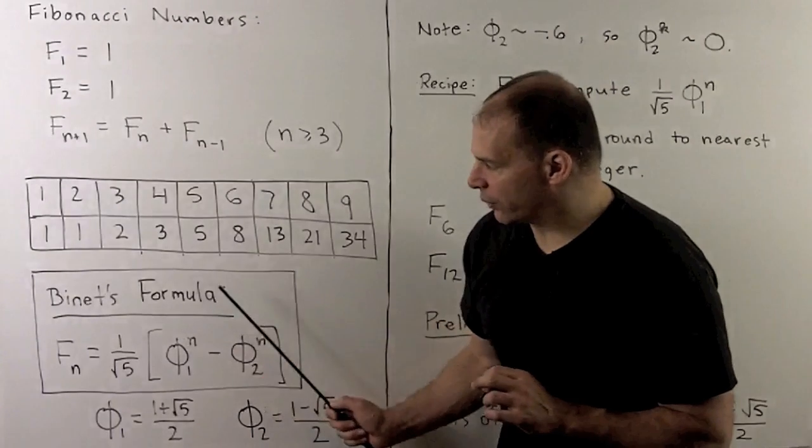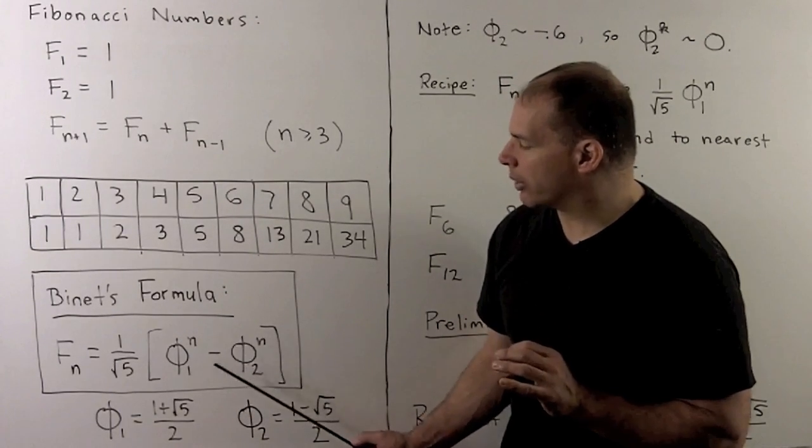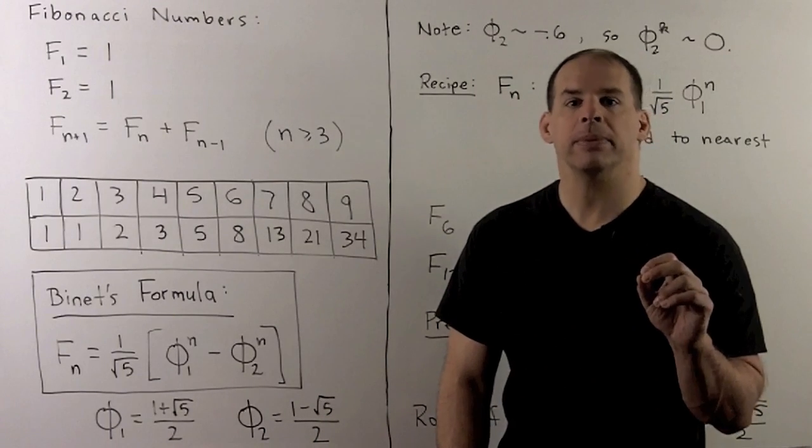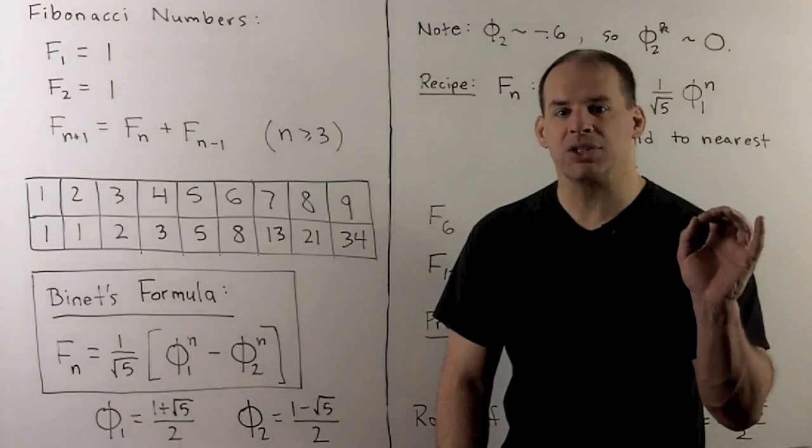So, using Binet's formula, the nth Fibonacci number is given by, we're going to take two numbers, phi 1 and phi 2. We'll show those in a little bit. Raise both to the nth power, take their difference, then divide by square root of 5.